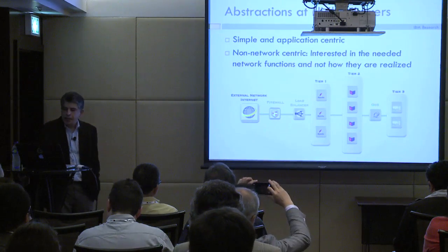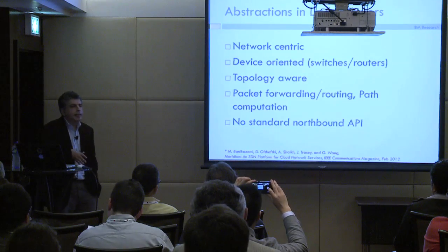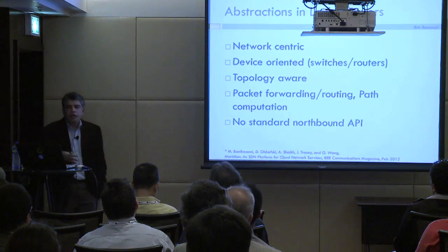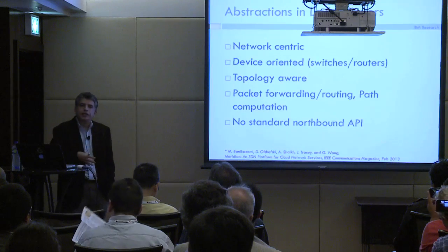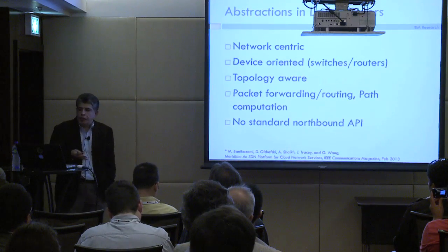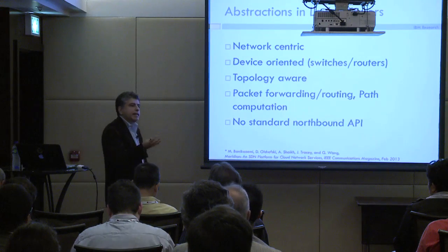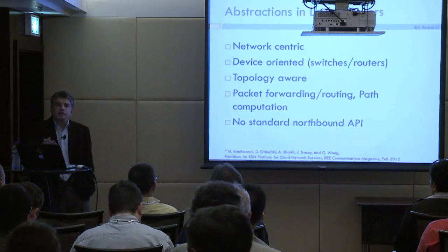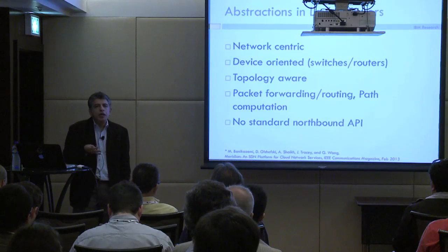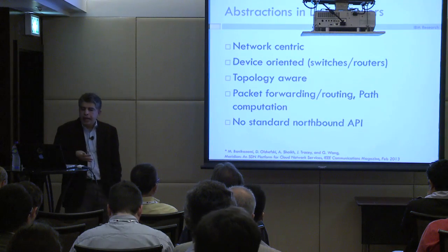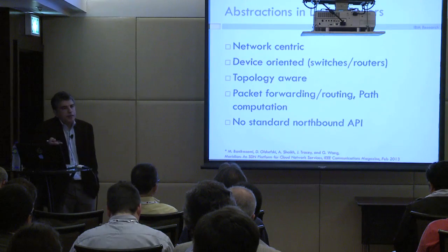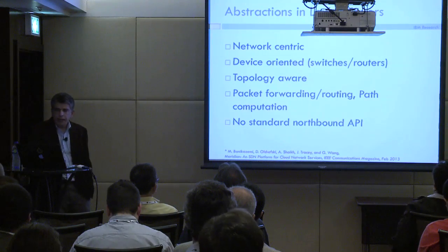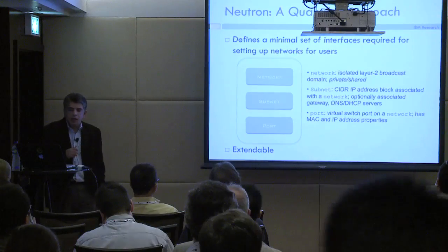On the other hand, the lower layers have more network-centric abstractions. They are for the most part device-oriented, relating to switches and routers. They are topology-aware, talk about forwarding packets, establishing routes between endpoints, and there are a variety of SDN controllers that all use different northbound APIs. At the end of the day, these are the vehicles that Neutron uses to realize its abstractions.